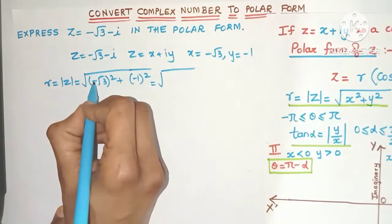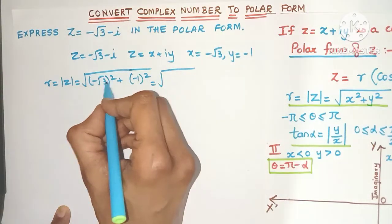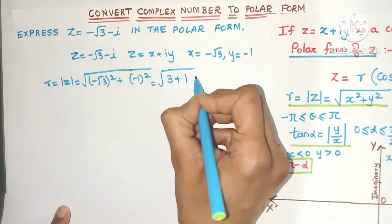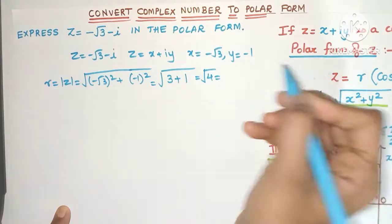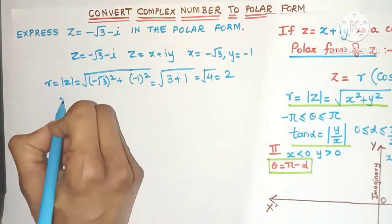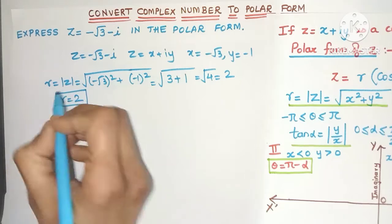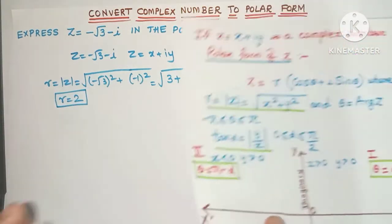So square root of 4. What is square root of 4? Yes, 2. So r will be 2. Very easily we can find out the r value.